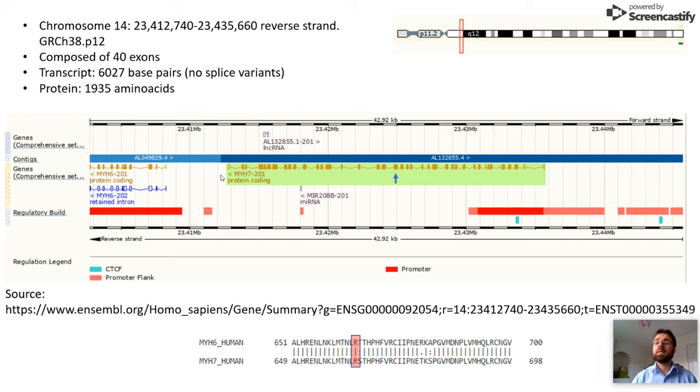The beta myosin in this case is located on chromosome 14 and is composed of exactly 40 exons. The transcript is a single transcript with no isoforms described. The transcript has 6227 base pairs and the resulting protein has 1935 residues. The variant is located to exon 18 and is not located to any of the splice sites.